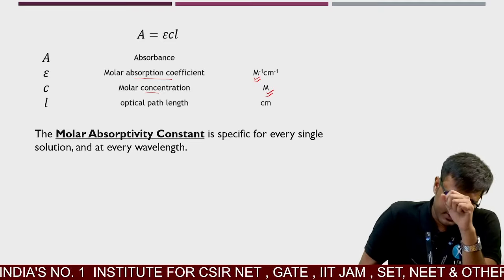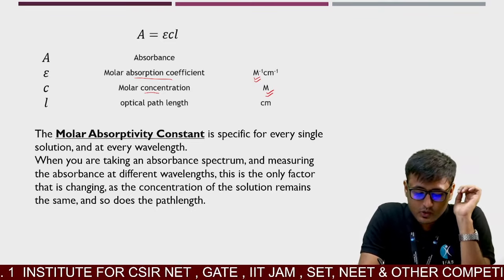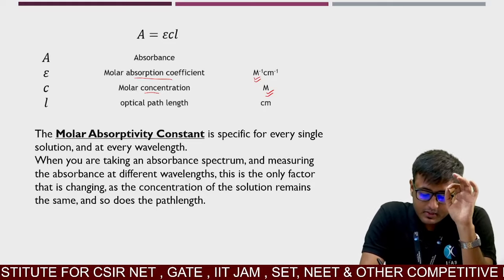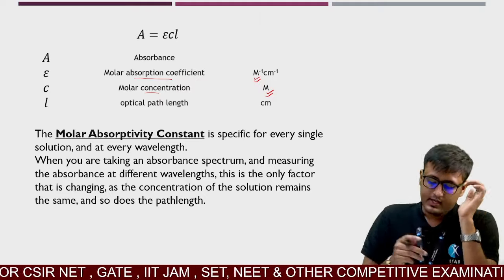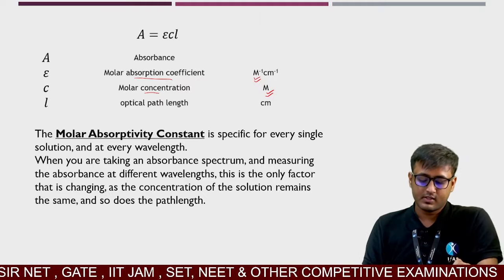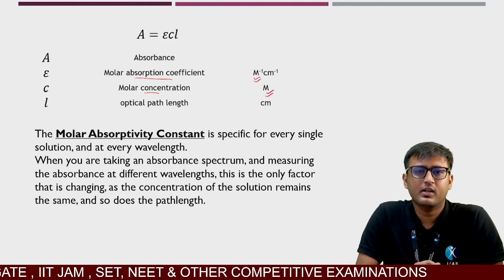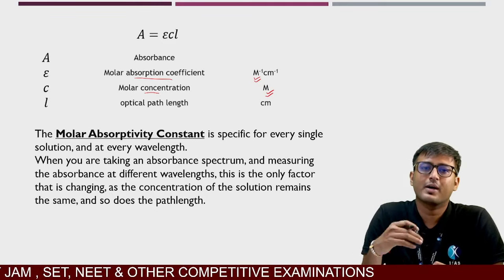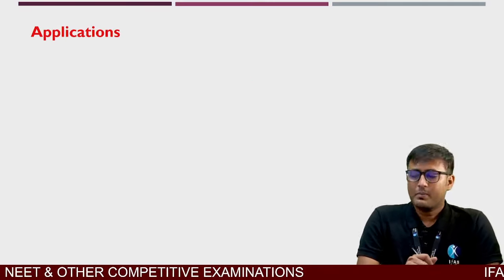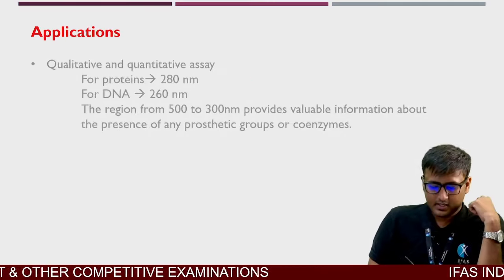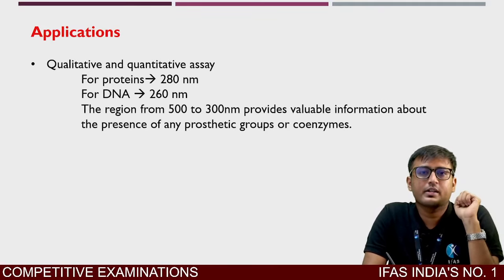When you are taking an absorbance spectrum and measuring absorbance at different wavelengths, concentration and path length do not change — as wavelength badhate jaate hain, epsilon change hota jaata hai. The epsilon at 280 nm will be different from the epsilon at 281 nm or 282 nm.